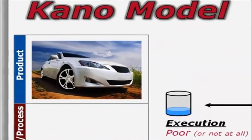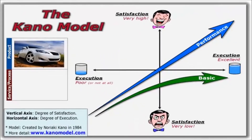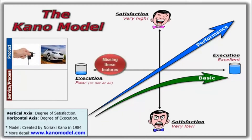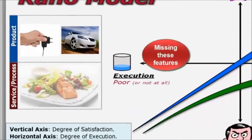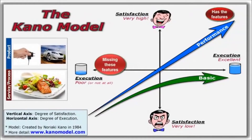A product example might be a car that can't get dirty, so it never needs to be washed. Or a cell phone that never needs to be charged. If either of these are missing in your next purchase, you'll be neutral. But if they are present, your satisfaction will likely soar. A service example might be a hospital that will order in a meal from a patient's favorite outside restaurant and deliver it to their room. You won't be dissatisfied if you didn't get this service, but you'll be delighted if you receive it with very little or no extra charge.